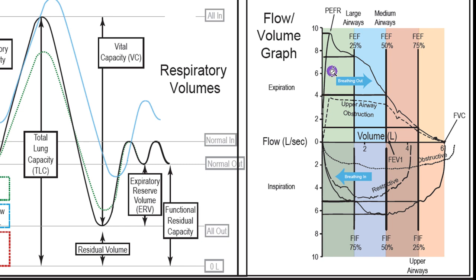If the peak were down here, it would tell us that there's an upper airway obstruction — something on the trachea or large airways. By the time we get to the forced expiratory flow at 75 percent, so after you've breathed out 75 percent of your air, what's still the rate of flow out? This tells us something about the small airways, as flow tapers off as you squeeze air out of the small airways.